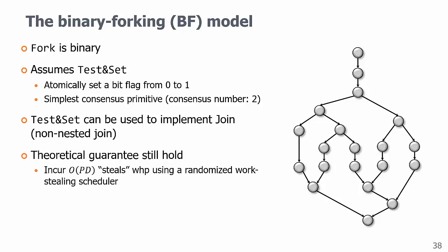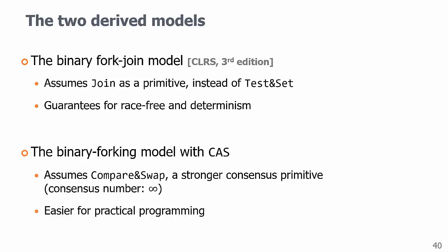But we also consider two common derived models. One is definitely the binary fork-join model that assumes join instead of test and set as a primitive, and has additional guarantees for race-free and determinism. And of course, we can make stronger assumptions for the consensus primitives, such as compare and swap. Many existing algorithms are based on these two models. In this paper, we'll mostly focus on the binary forking model and discuss why we made these decisions.